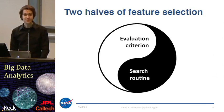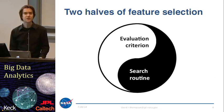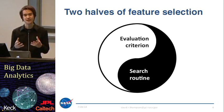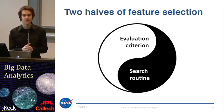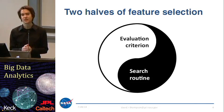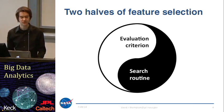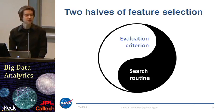Every feature selection system involves two different parts. There's an evaluation criterion — that is, how you answer the question of whether a feature or any given set of features is good or not, how it performs. Then there's a search routine that you use to explore the space of different feature combinations. We're going to start by discussing the evaluation criteria.